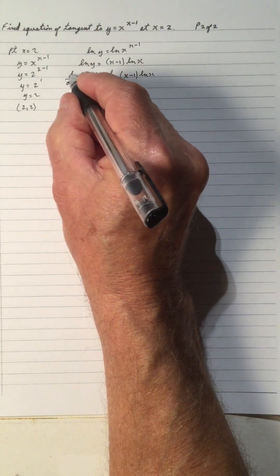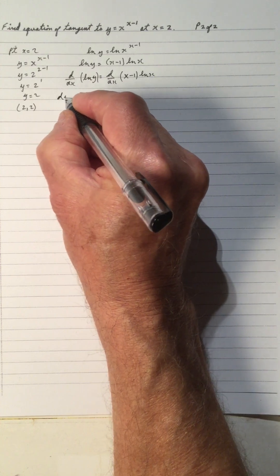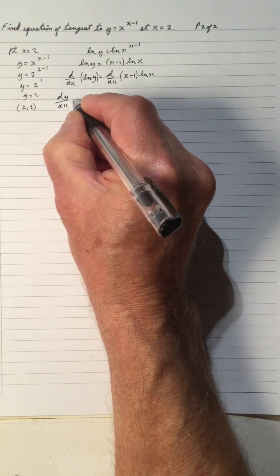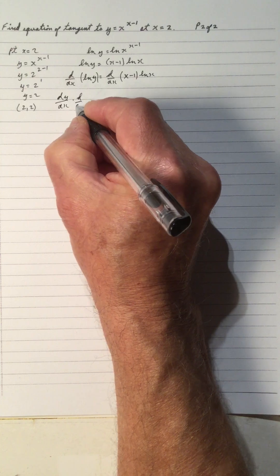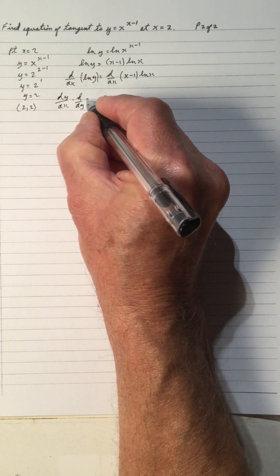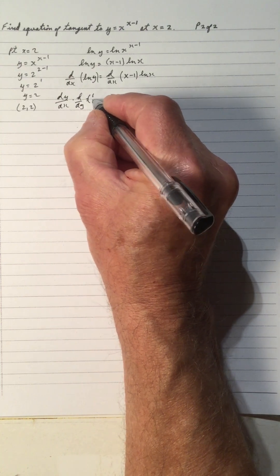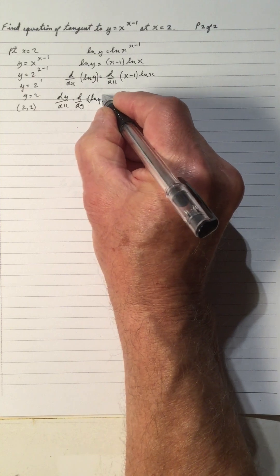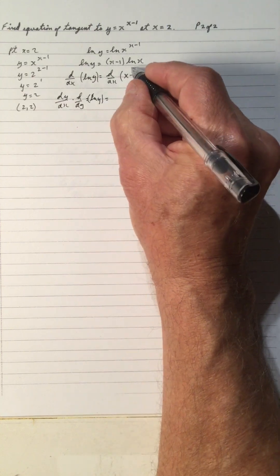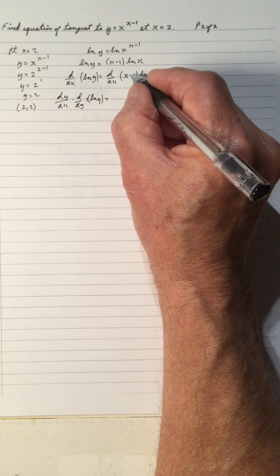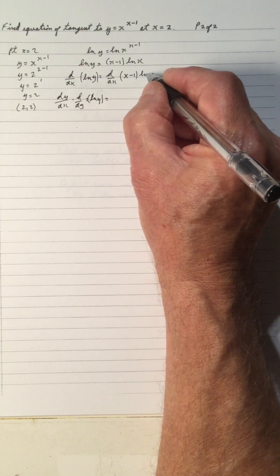And d dx is changed to dy dx times 1 over y times dy d ln y. And this is a product of two functions, x minus 1 and ln x.